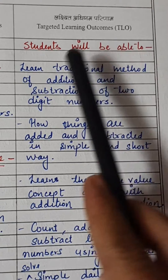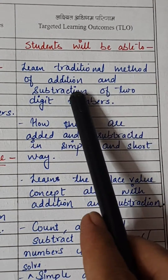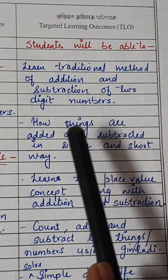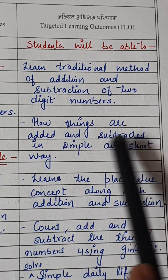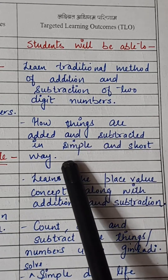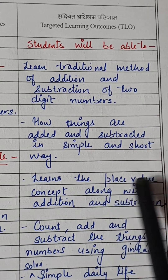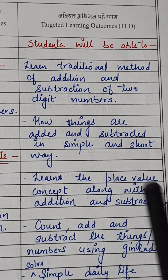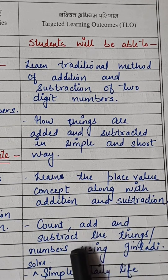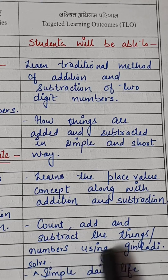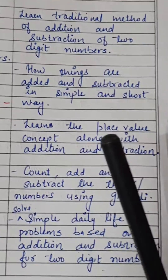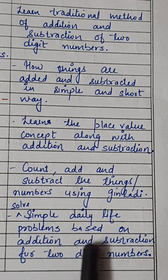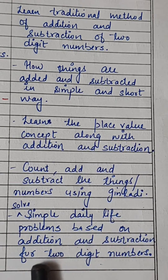Now let's see the teaching and learning outcomes. Students will be able to learn the traditional method of addition and subtraction of two-digit numbers — how things are added and subtracted in a simple and short way. They will learn the place value concept along with addition and subtraction. They'll count, add, and subtract things and numbers using the ginlady, and solve simple daily life problems based on addition and subtraction of two-digit numbers.